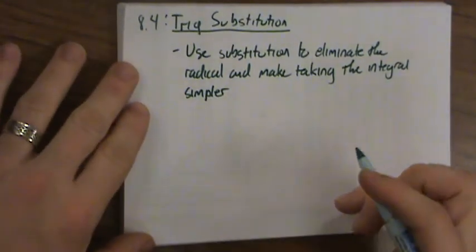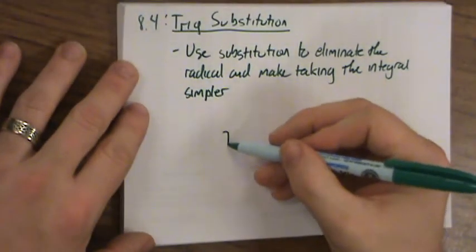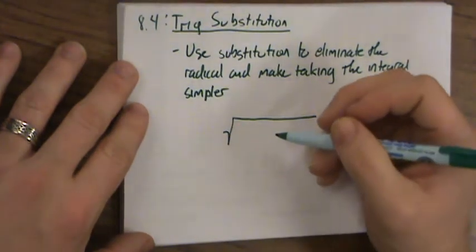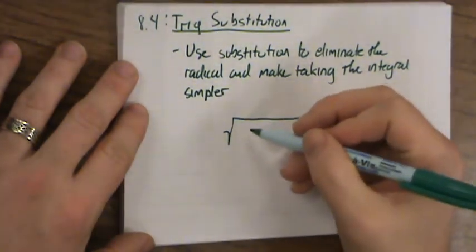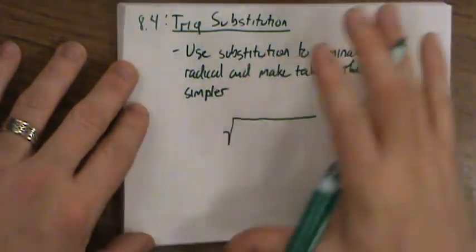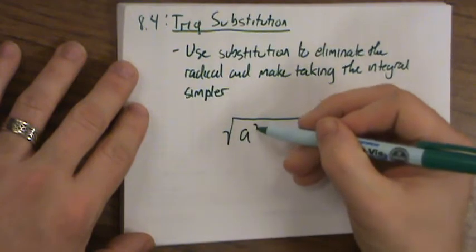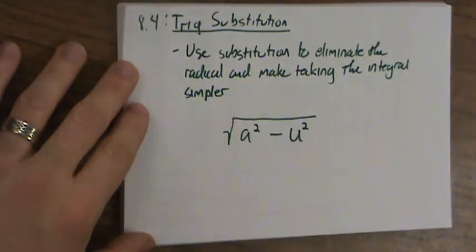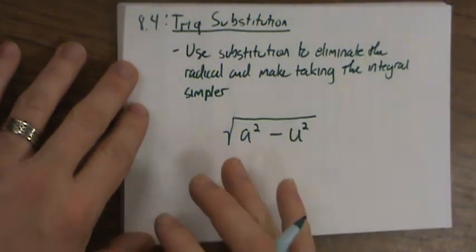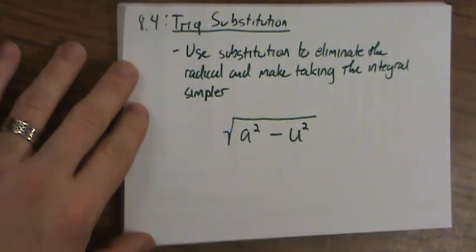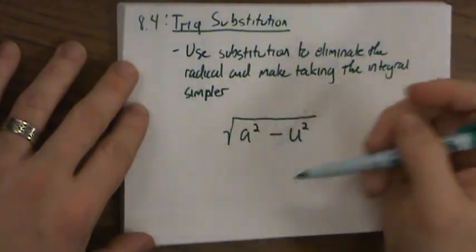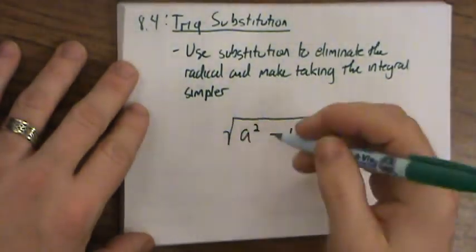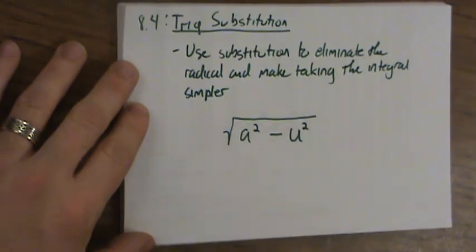So just as a quick example of why we would do this, let's look at an integral involving an expression like this, where we have a squared minus u squared. Now we can look and find some special cases where we can use those list of integrals in 8.2 or 8.1, to take integrals involving expressions like this. But sometimes we're going to have extra stuff in there that's going to make it impossible to do that. So what we're going to do is use trig substitution.